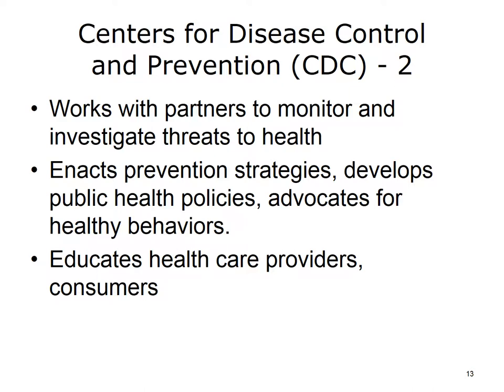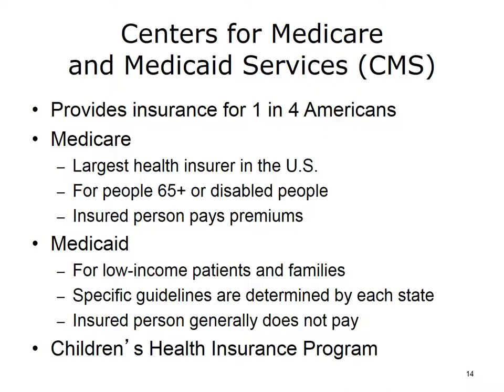The Centers for Medicare and Medicaid Services, or CMS, provides health care insurance for one in every four Americans. Medicare is the largest health insurer in the U.S., processing more than 1 billion claims every year. Medicare is for people aged 65 and older, along with younger people who have certain disabilities. Medicare insurance is divided into four parts: Part A (hospital insurance), Part B (medical insurance), Part C or Medicare Advantage (which allows the use of private companies approved by Medicare or provider organizations), and Part D (prescription drug coverage). The insured person may pay monthly premiums depending on the plan selected.